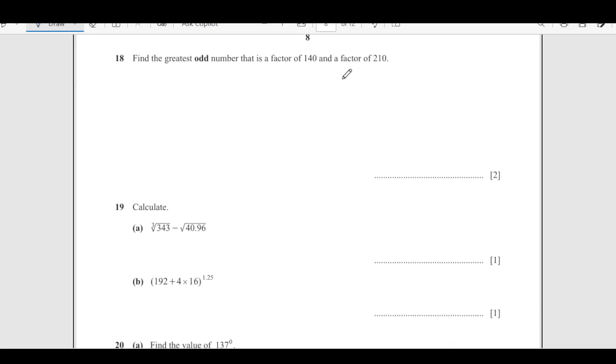Now number 18, find the greatest odd number that is a factor of 140 and 210. We will take 140 and 210. So this can be split into, let us say, 10 times 14. So then this is 2 times 5 and this is 2 times 7. Similarly, here we have 10 times 21. So this is 2 times 5 and this is 7 times 3. So odd numbers, what are common odd numbers here?